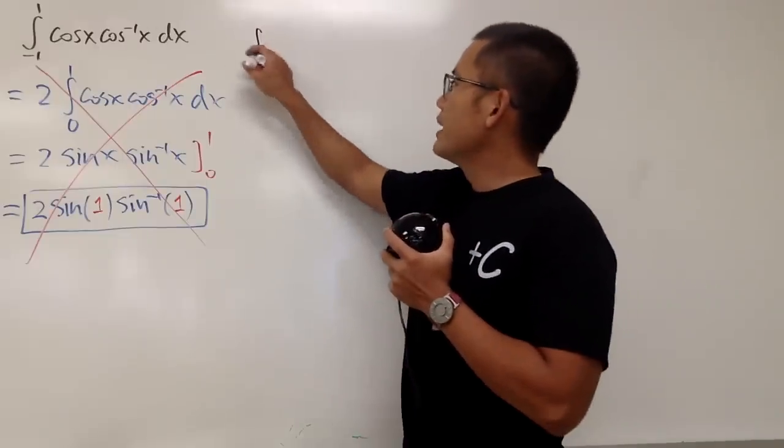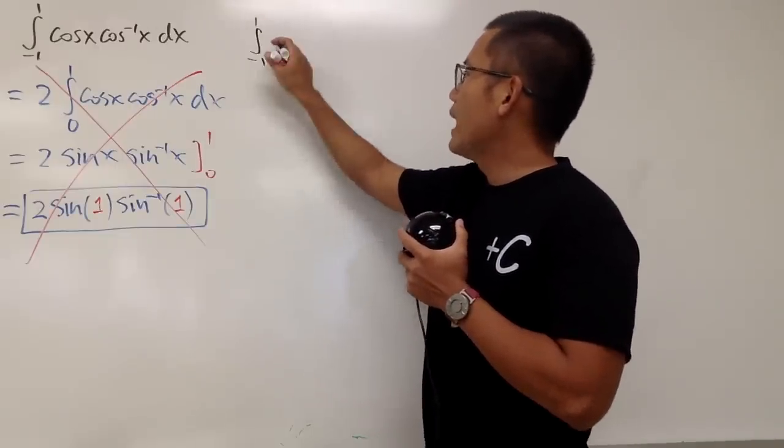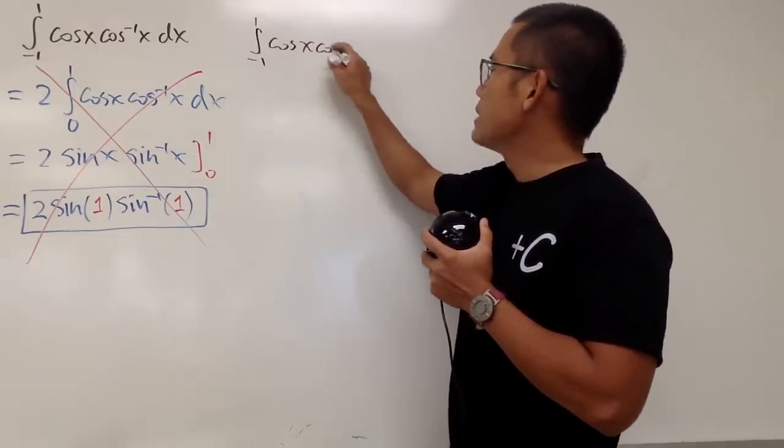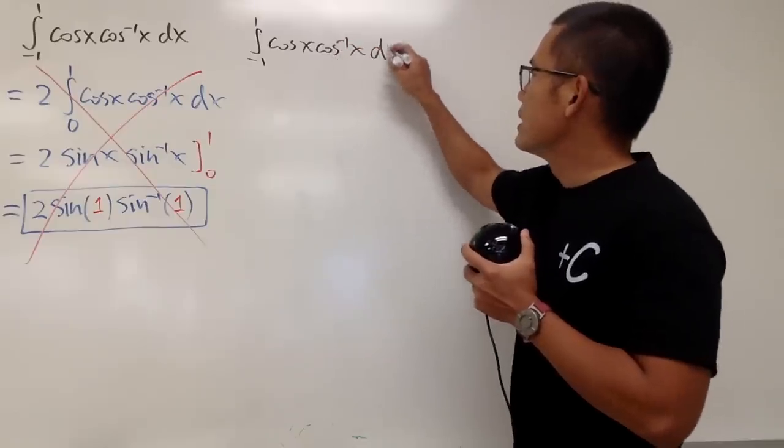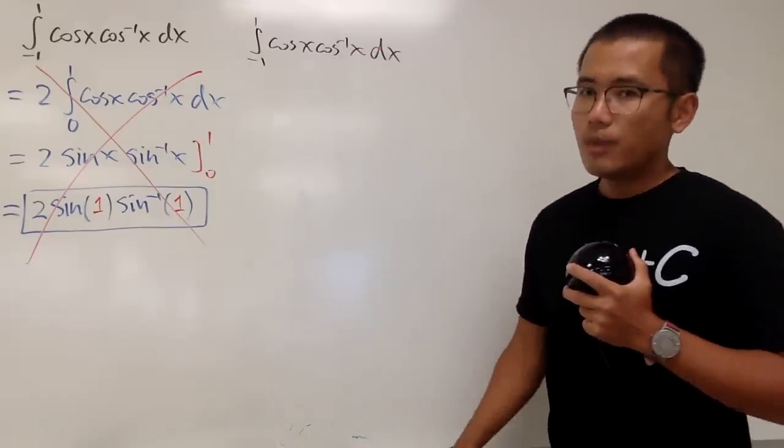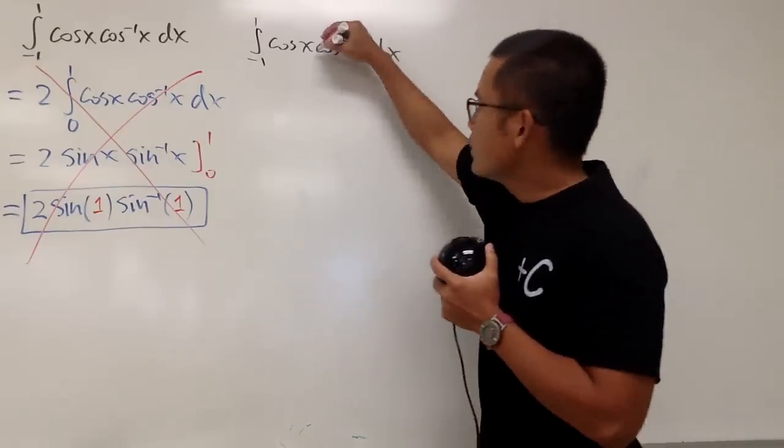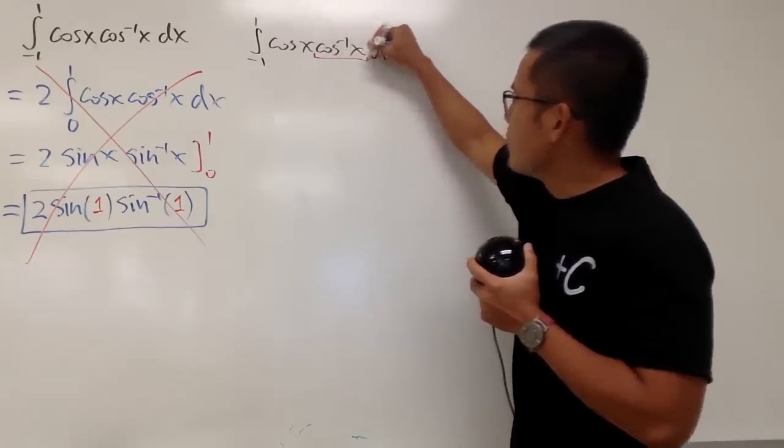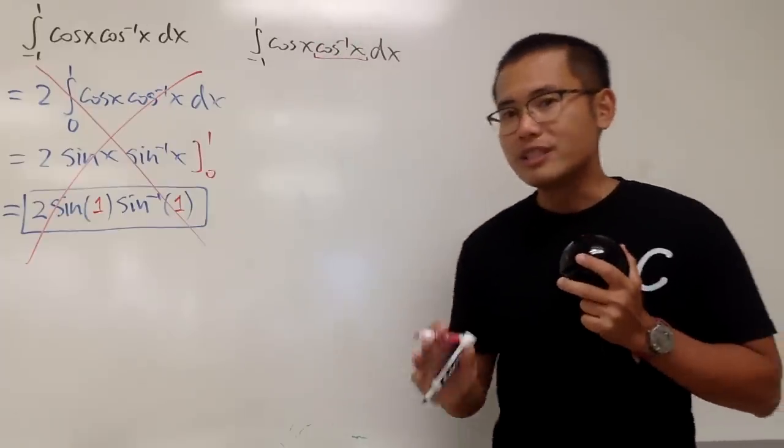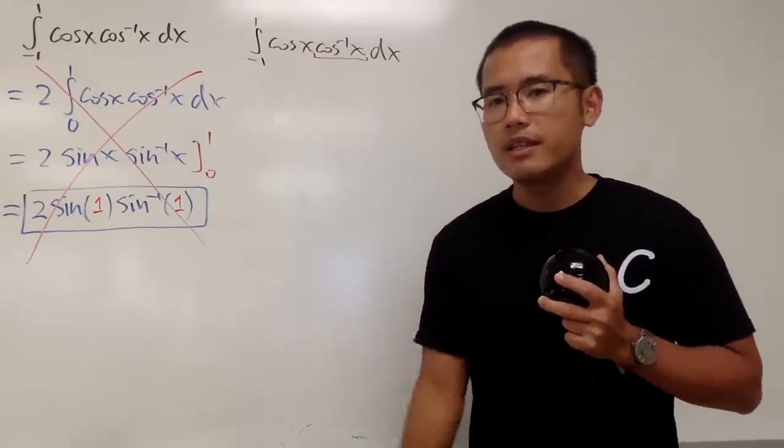So here we go. Let's look at the integral from negative 1 to 1, and we have cos x times inverse cos x dx, like this. Well, here's the deal. In fact, we can use an identity to help us out right here.